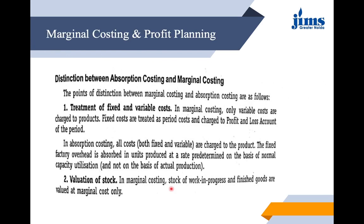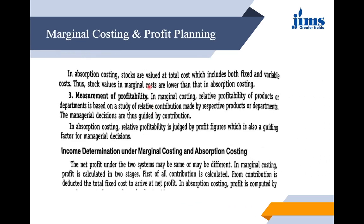Key distinctions between absorption costing and marginal costing: In marginal costing, only variable costs are charged to products; fixed costs are period costs charged to P&L. In absorption costing, all costs — both fixed and variable — are charged to the product, with fixed factory overhead absorbed at a predetermined rate based on normal capacity. For stock valuation, marginal costing values WIP and finished goods at marginal cost only, while absorption costing values stocks at total cost including fixed overheads — making marginal costing stocks lower. For profitability, marginal costing uses contribution as the guide; absorption costing uses profit figures.